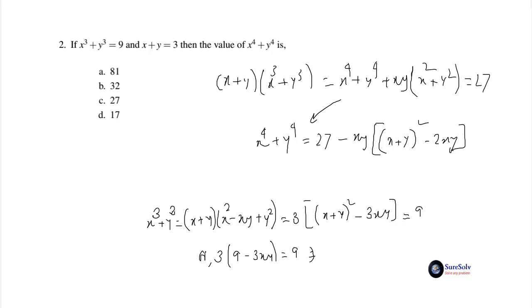Or 3(9 - 3xy) = 9. This gives xy = 2. It is easy to see. We will put the value of xy and x + y in the earlier expression we have got. So x⁴ + y⁴ = 27 - 2(9 - 4) = 27 - 2(5) = 27 - 10 = 17.